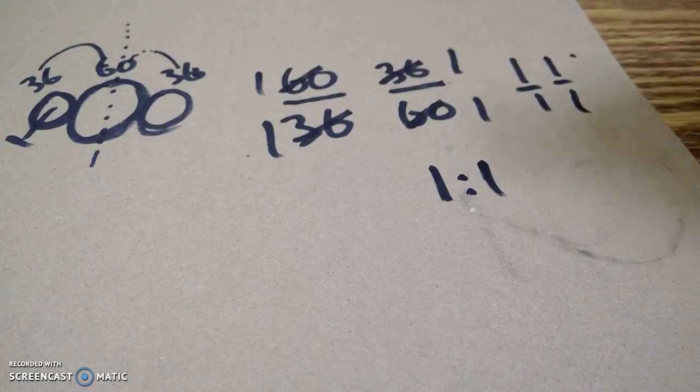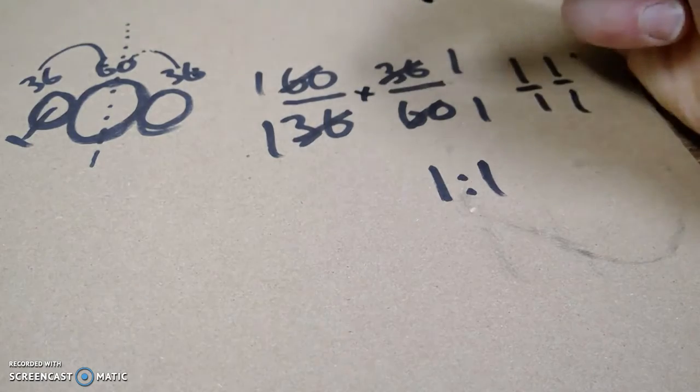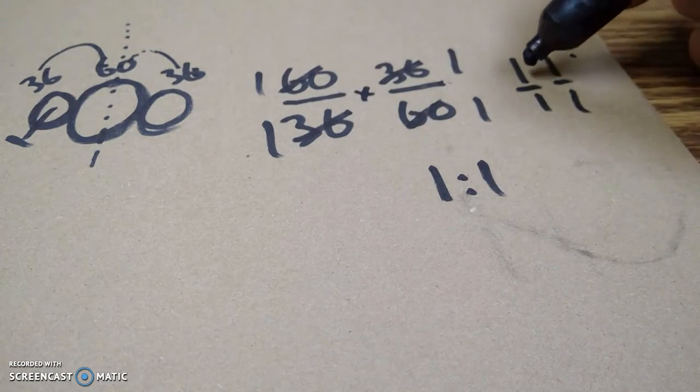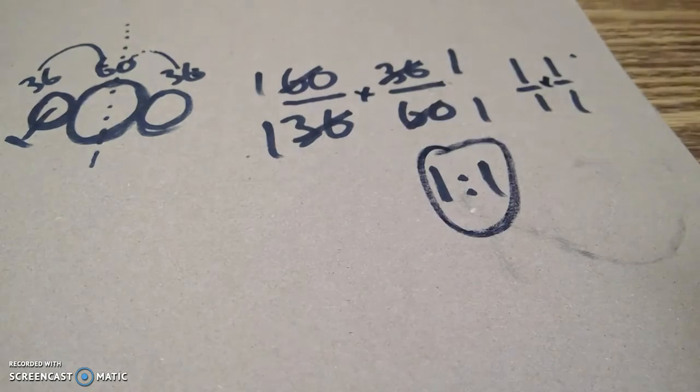So you gotta multiply them together. It's this gear system multiplied by this gear system. Well, 1 times 1 is 1, and 1 times 1 is 1. It's a 1 to 1 system.